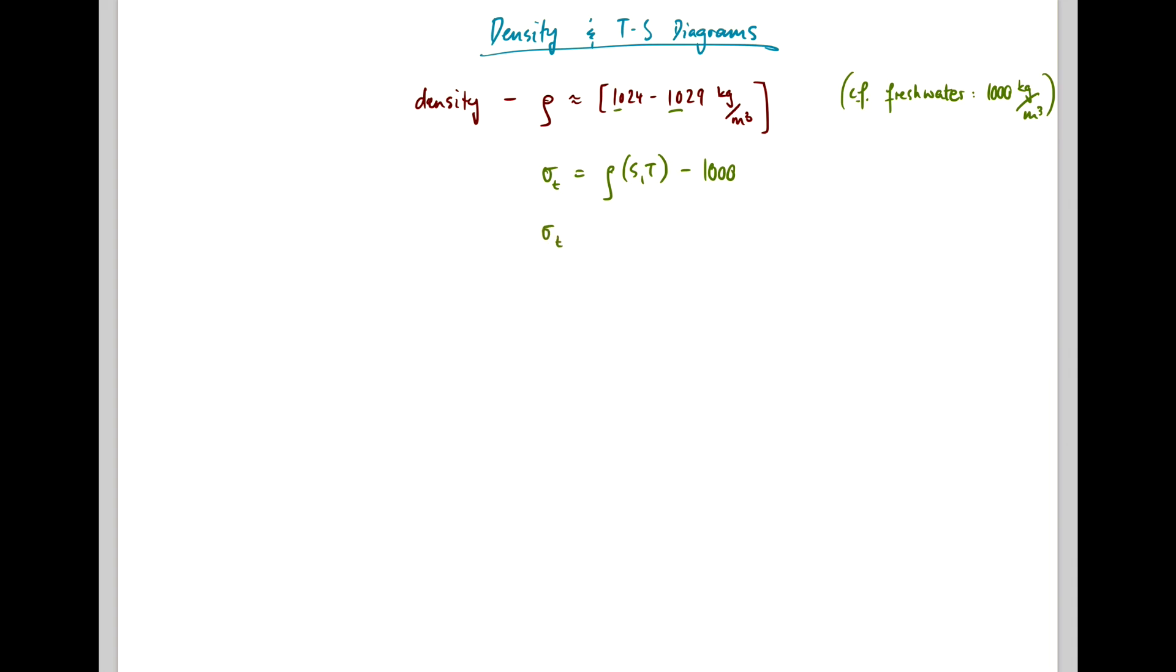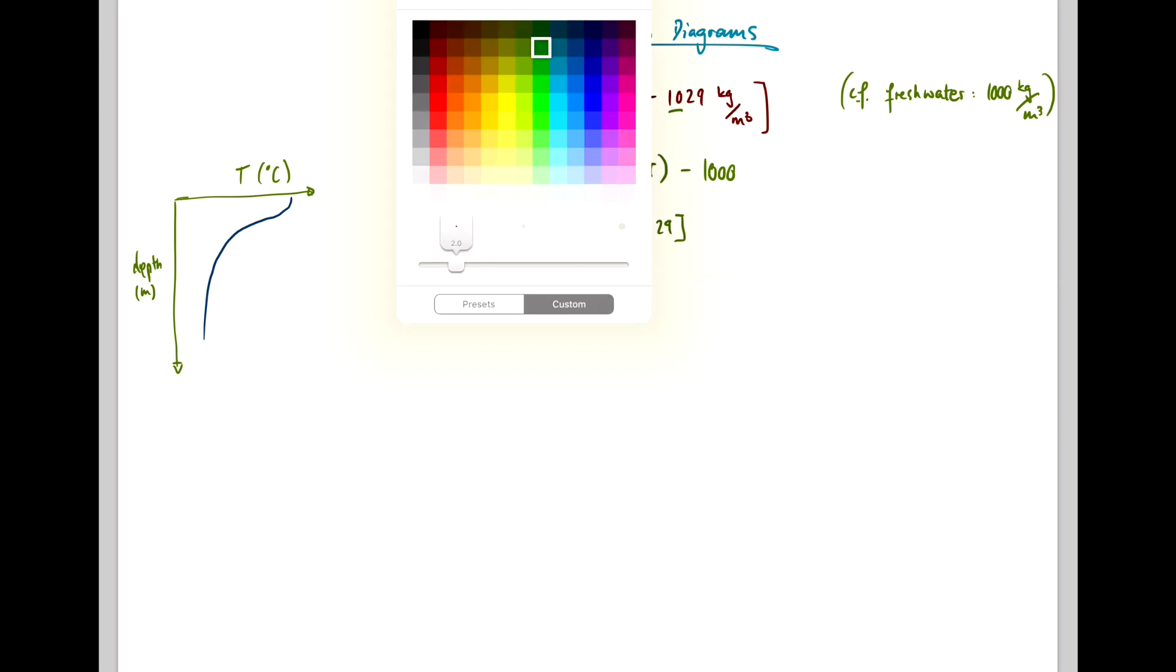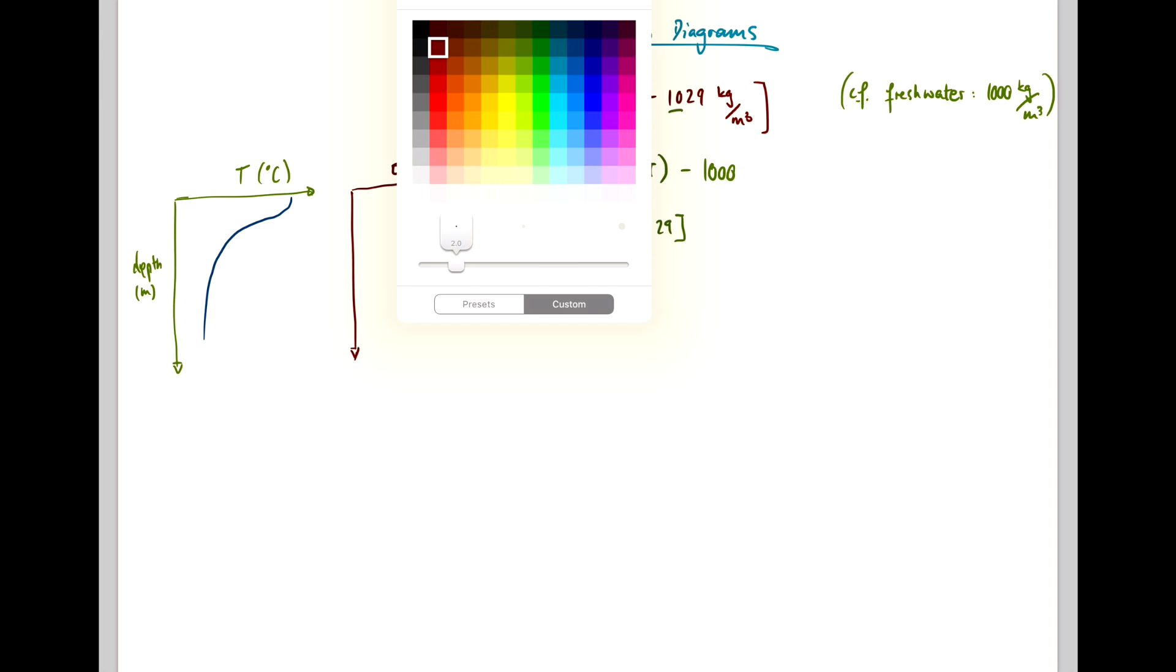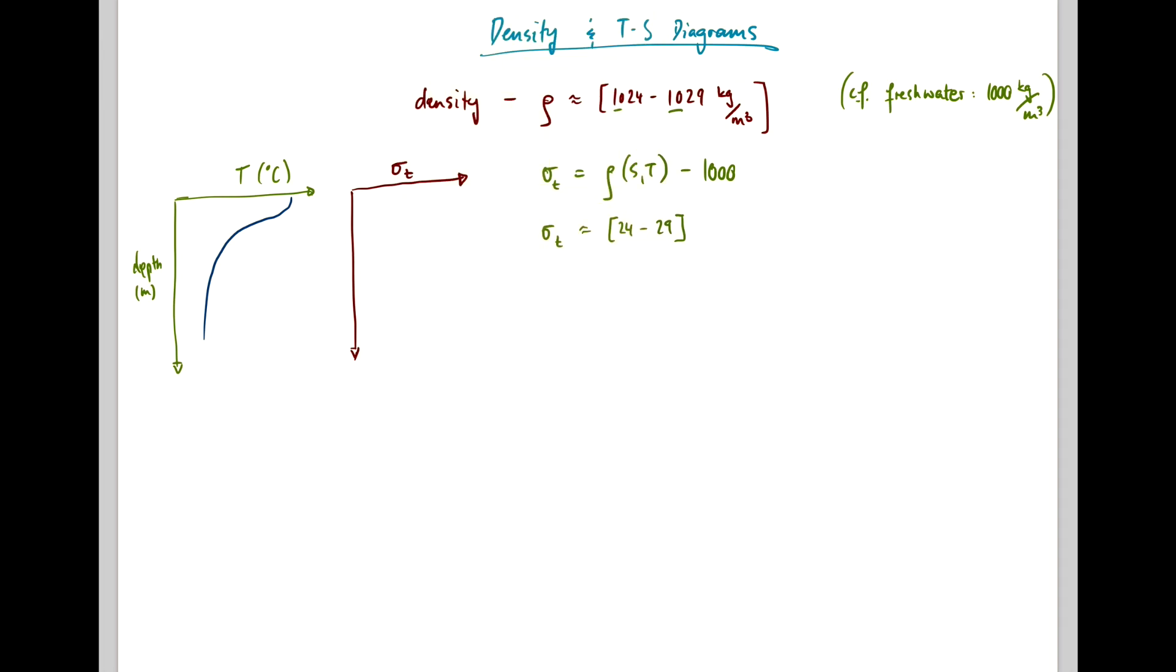So typical sigma T ranges are 24 to 29. If you have a typical temperature profile looking something like this, then your density profile will broadly mirror that in most scenarios. But it will be reversed since the warmest temperatures give the lowest densities.